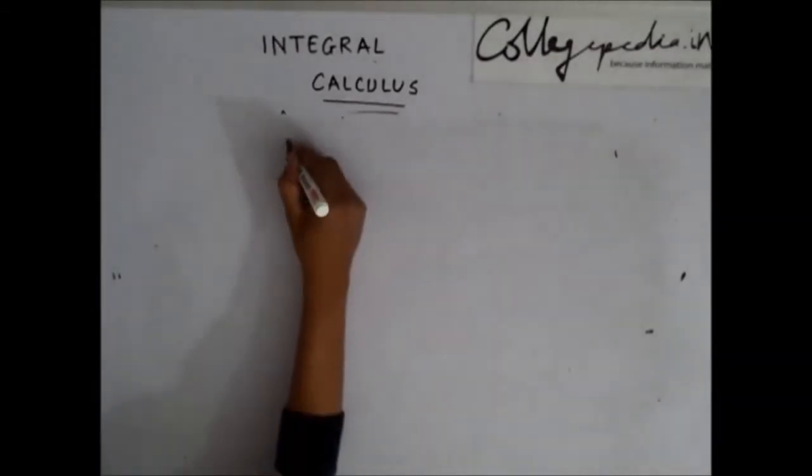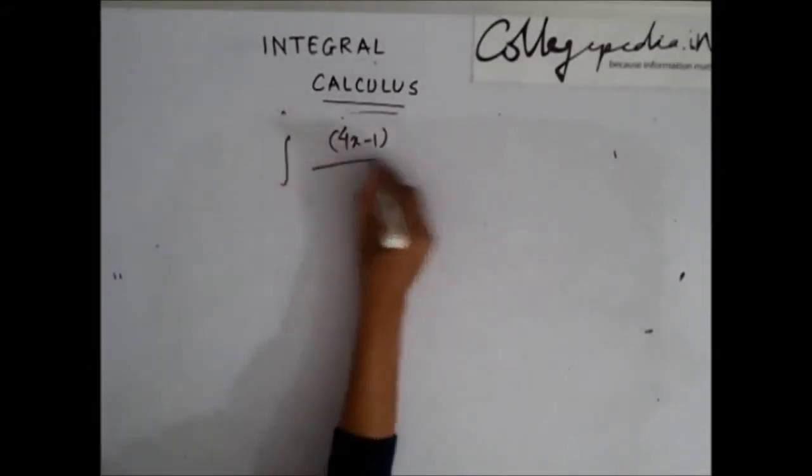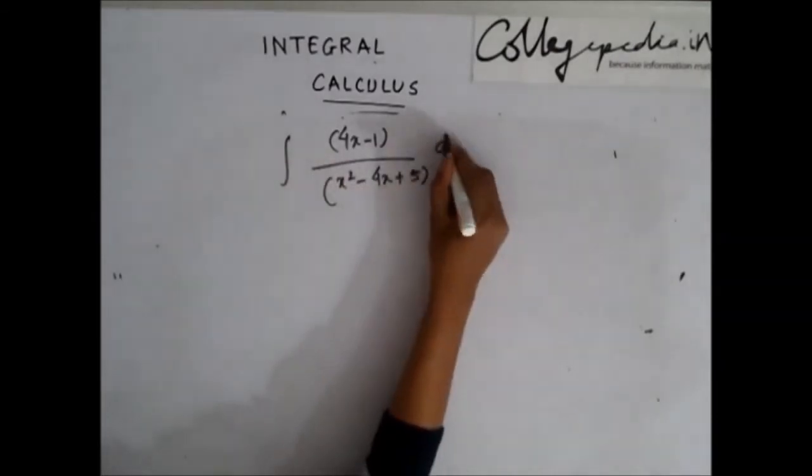Let's say you have been asked to integrate 4x minus 1 divided by x square minus 4x plus 5 dx.